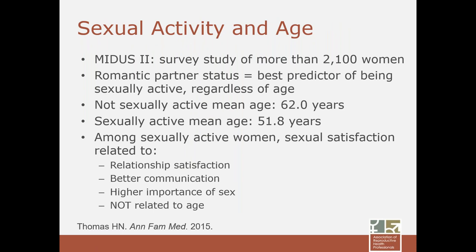Data from the MIDUS-2 study — Survey of Midlife Development in the United States — included more than 2,100 women aged 28 to 84. About 60% of married or cohabitating women aged 60 years and older were sexually active. The non-sexually active mean age was 62, but the sexually active mean age was 52. Romantic partner status was the best predictor of whether one was sexually active, regardless of age, even for women in their 70s and 80s. Sexually active women were found to be sexually satisfied regardless of age or menopause status.